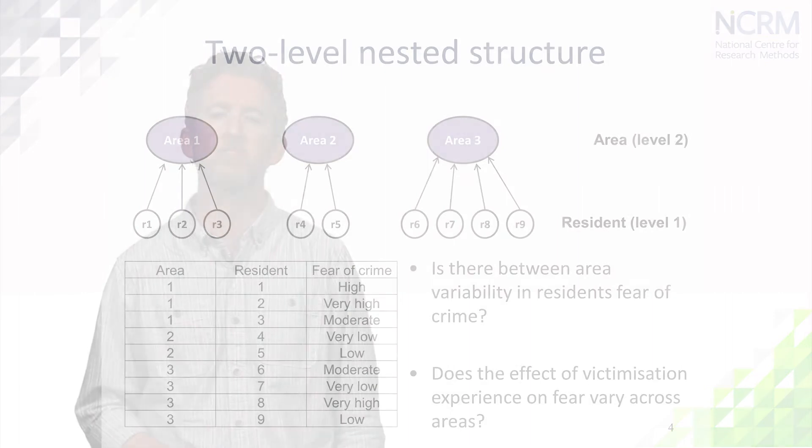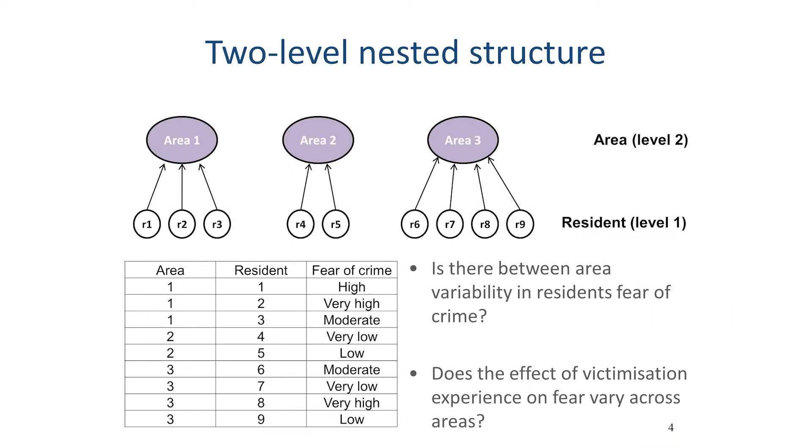Perhaps the simplest structure we can deal with is a two-level nested structure. Here, for example, we have data from respondents showing just the first nine. In multilevel models, we typically refer to data measured on individual units as level one. We also know that these respondents are resident in different areas. Here we refer to the next level where we have information as level two.